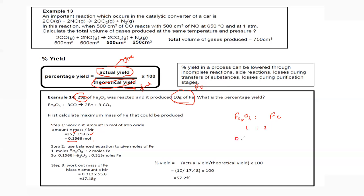With 0.1566 moles of iron oxide and a 1:2 mole ratio, cross-multiplying gives 0.313 moles of iron. Multiplying by the molar mass of iron gives 17.48 grams of iron. This is the theoretical value.